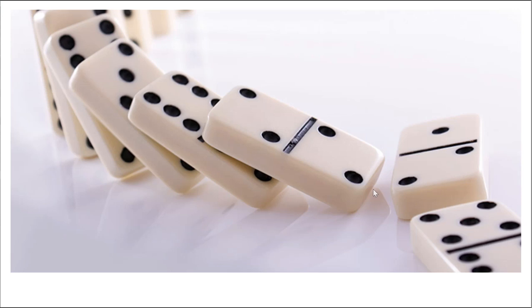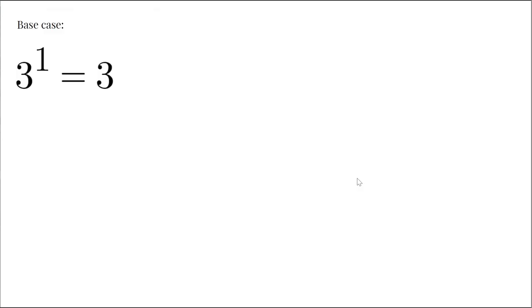You can think about this like the domino effect. Given that we know these two things: we know it works for one — 3 to the first power is odd — and since it works for 3 to the first power, it works for 3 to the second power, and since it works for 3 to the second power, it works for 3 to the third power, and so on and so forth. It continues until any finite power of three is odd. So the base case, n = 1, is obviously true because 3 is odd.